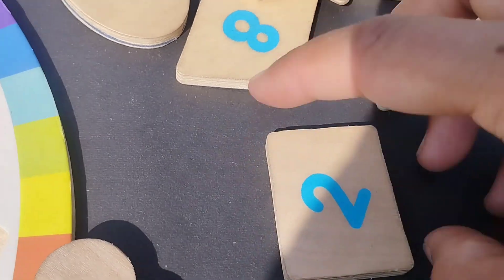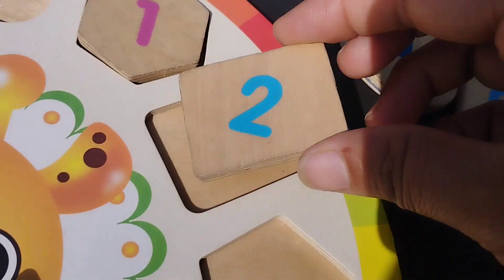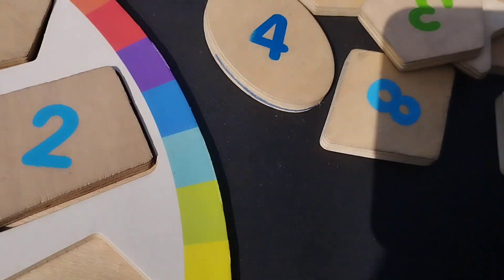Where is number two? This is number two. And the shape is rectangle.